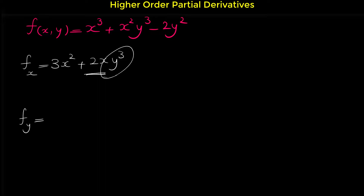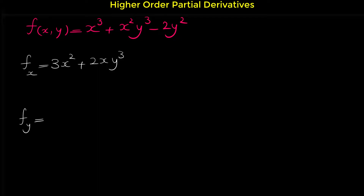So we multiply by the coefficient y cubed. The derivative of negative 2y squared with respect to x is 0, because when we take the derivative with respect to x, everything other than x is a constant, and the derivative of any constant is 0. So the partial derivative f sub x equals 3x squared plus 2xy cubed.